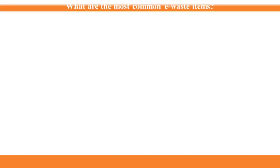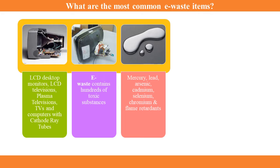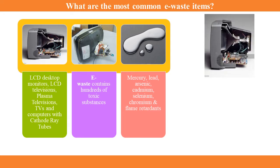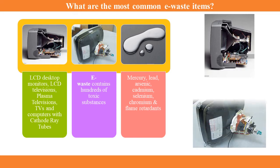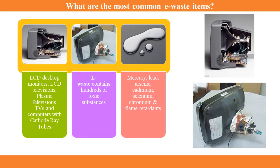Now I am going to explain what are the most common e-waste items. The most common hazardous electronic items include LCD desktop monitors, LCD televisions, plasma televisions, and TVs and computers with cathode ray tubes. E-waste contains hundreds of substances, many of which are toxic, including mercury, lead, arsenic, cadmium, selenium, chromium, and flame retardants.